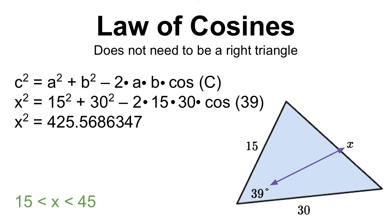The very last thing is to just take the square root. So if you do the square root of 425.5686347, you are going to get 20.63, and 20.63 is in between 15 and 45. So it's a great check for us to make sure our answer is reasonable.